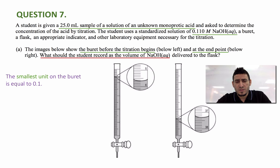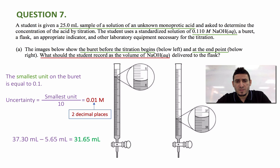I need the precision to calculate the uncertainty which is equal to the smallest unit divided by 10 and the uncertainty on this burette is equal to 0.01 molar. Now looking at this number I can see that the uncertainty has two decimal places. So the numbers that I need to record using this burette has to include two decimal places. So the answer should be 37.30 minus 5.65 equals to 31.65 milliliter. Now the 37.30 is the final volume and the 5.65 is the initial volume. So the student has to record 31.65 milliliter as the volume of sodium hydroxide delivered to the acid solution.